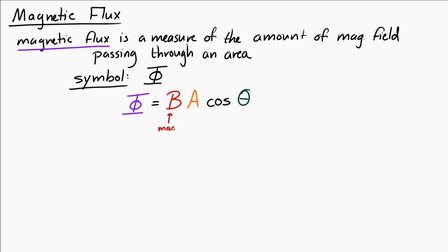The meaning of these things is B represents the magnetic field strength in that area. A is the area. And theta here is a little strange. It's the angle between the magnetic field and a vector perpendicular to the area.